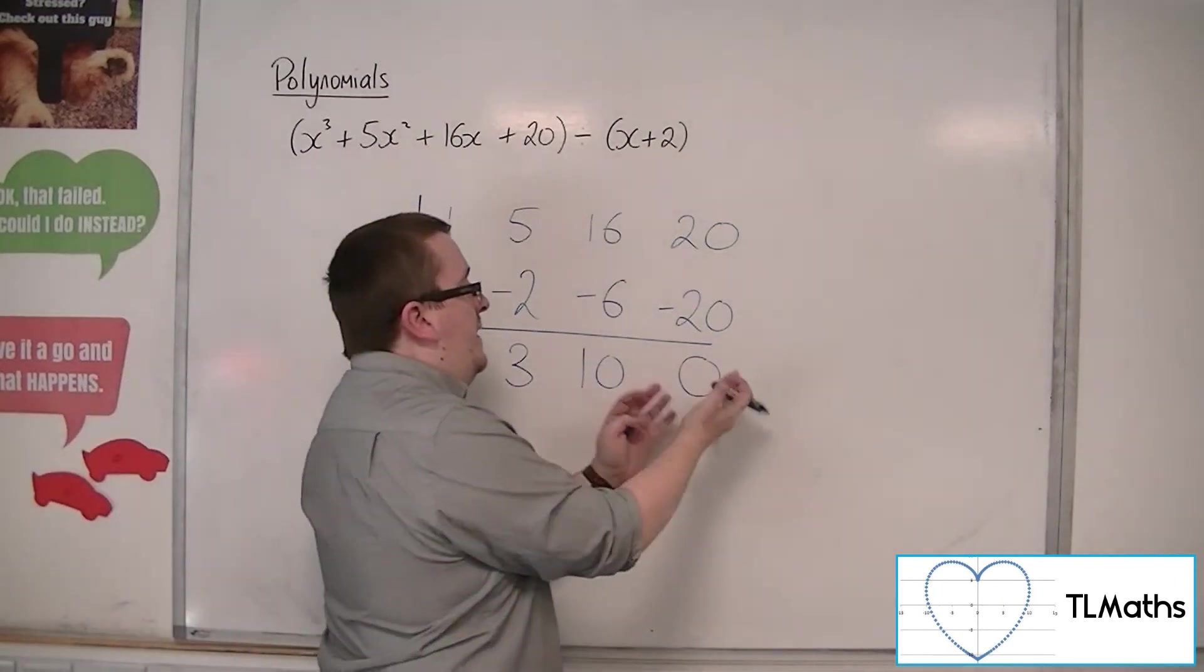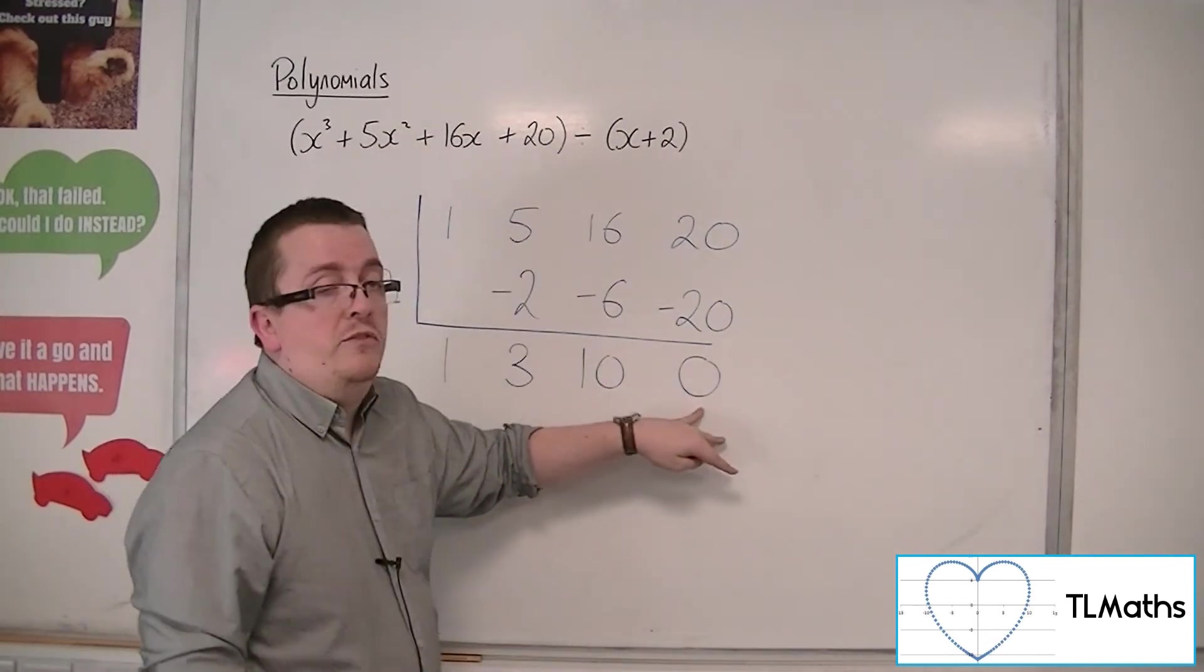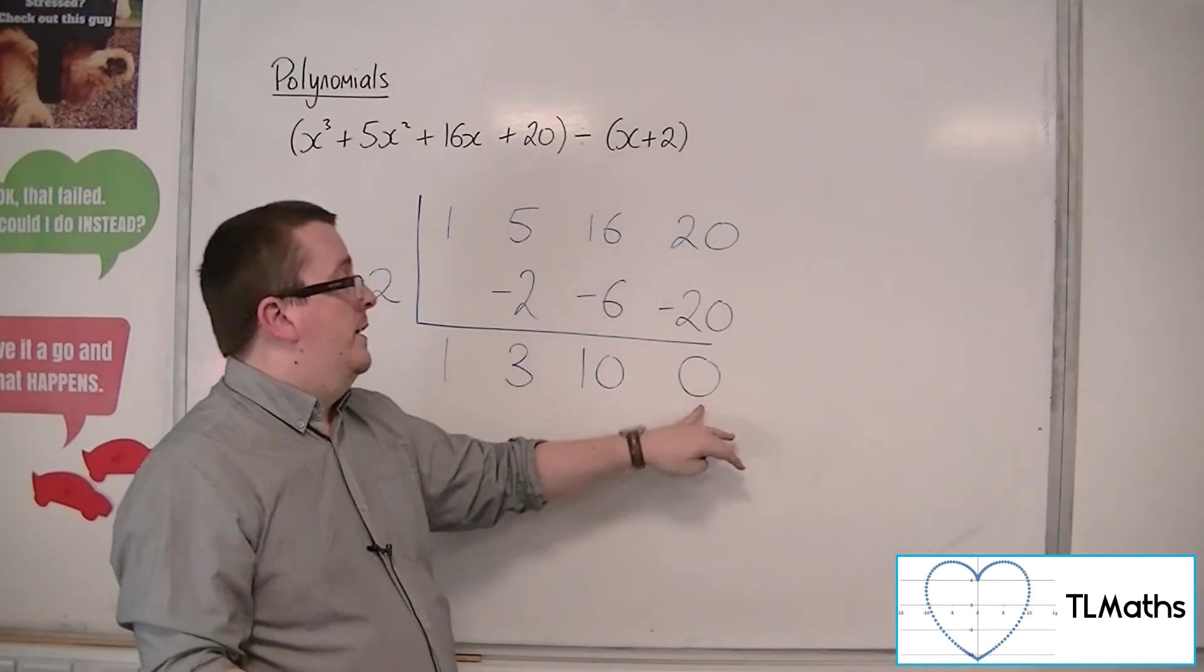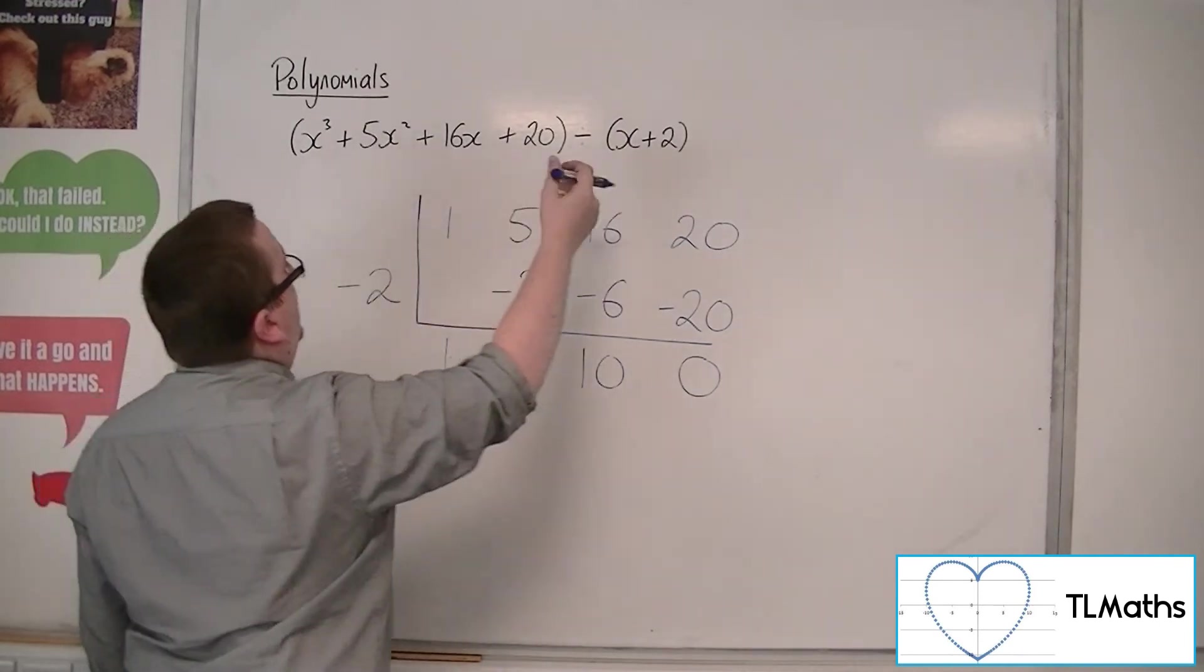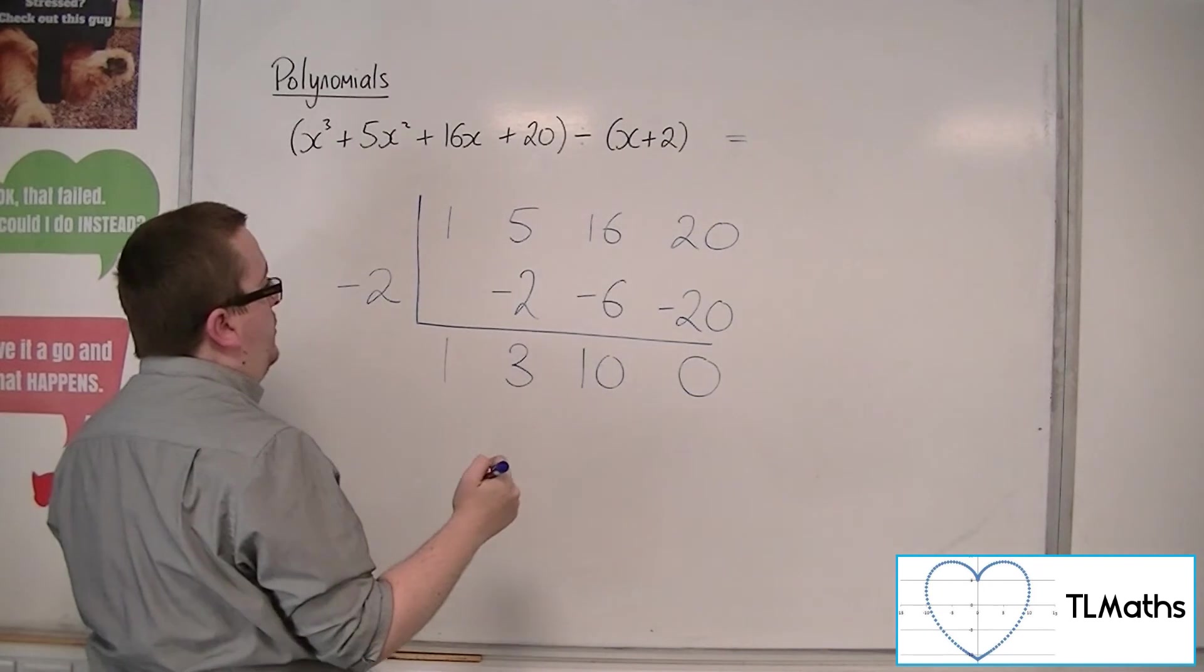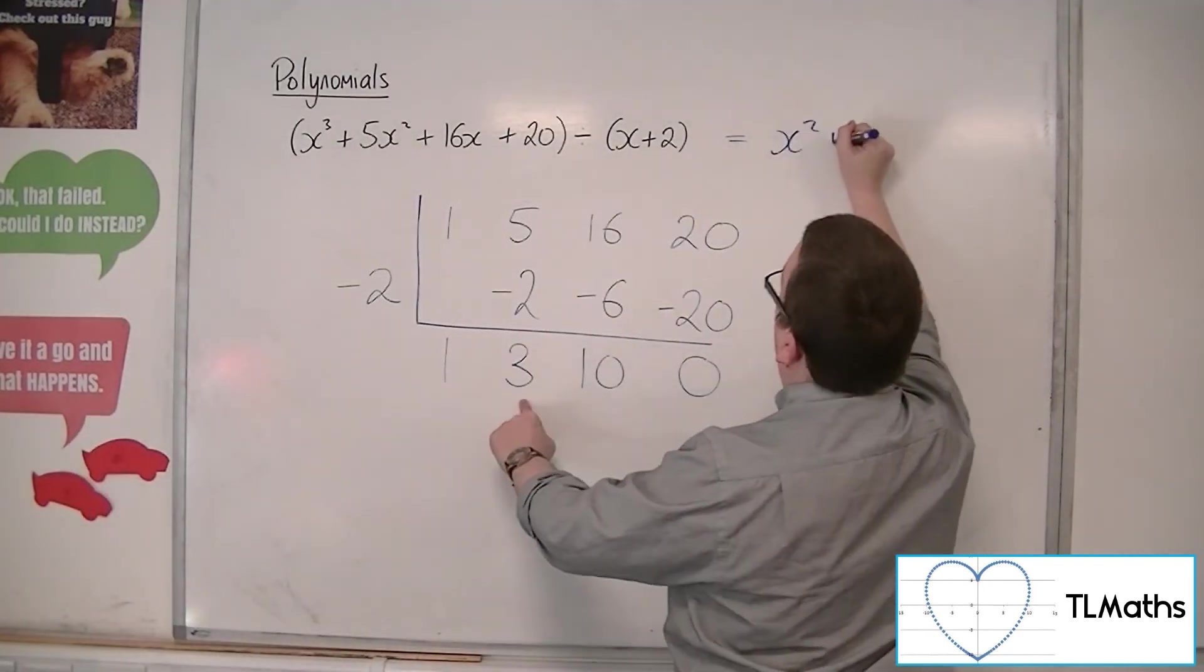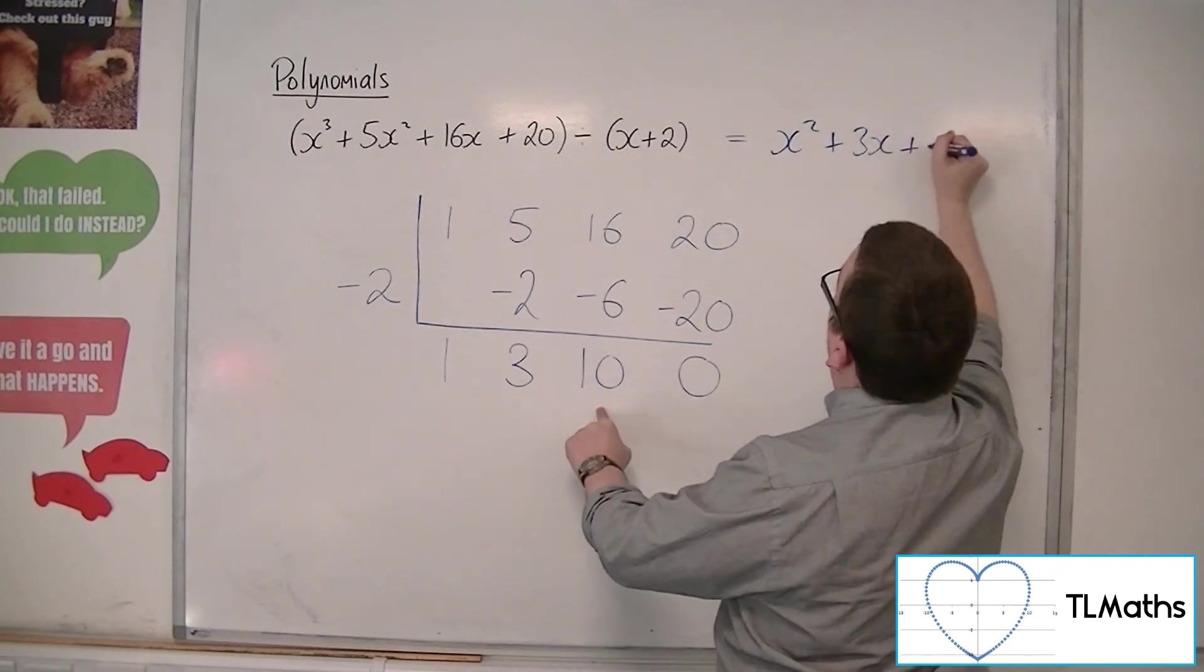And so what we have at the end, we have that x plus 2 must be a factor because we've got 0 there, 0 remainder. So that means that this cubic divided by x plus 2 is x squared plus 3x plus 10.